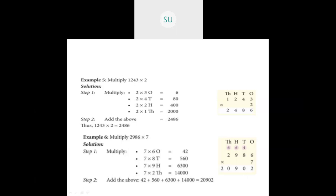Alternatively: 2 into 3 ones is 6. 2 into 4 tens gives 8 tens, that is 80. 2 into 200 gives 400. 2 into 1000 is 2000. When you add all of them, you get 2486.